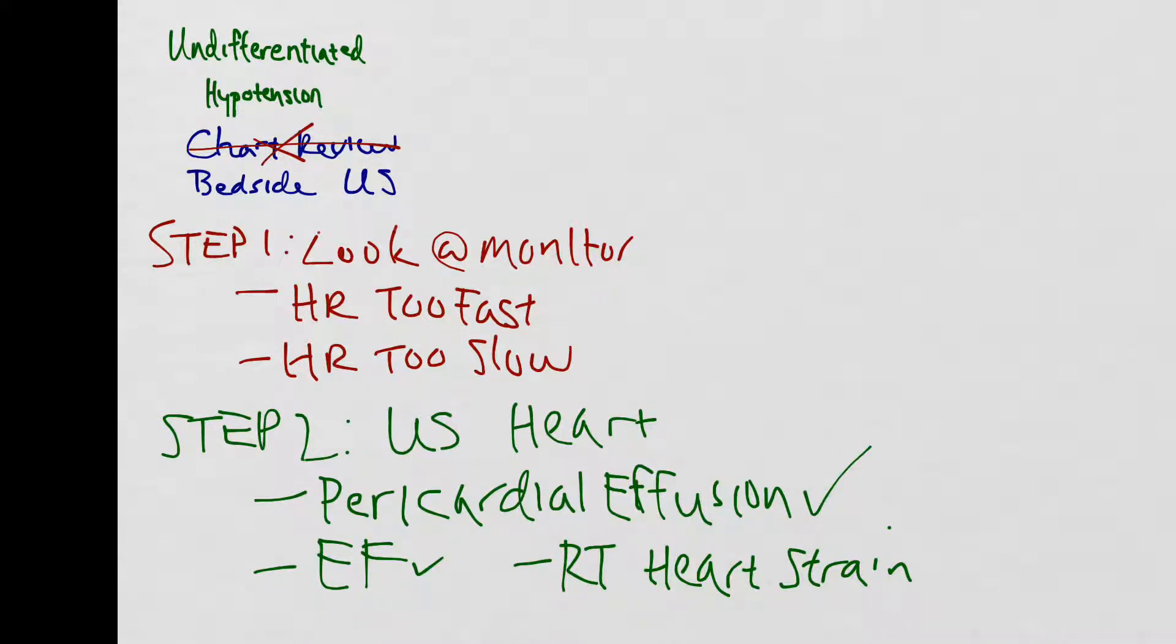So you're going to be using your EF information when you look at the IVC to figure out whether or not you should actually be giving your patient any volume or whether you should actually be diuresing them. The last thing you want to look for is right heart strain, because if there's right heart strain, potentially your patient has a massive PE and you'll need to consider giving the patient TPA.